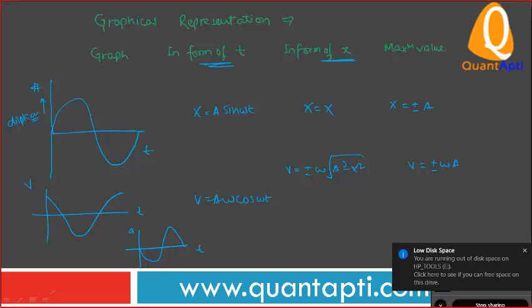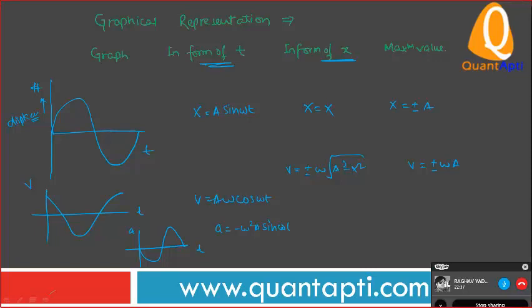Very good. Equation is equal to minus omega square A sin omega T. In terms of X, minus omega square X. Maximum value omega square A, plus minus omega square A.